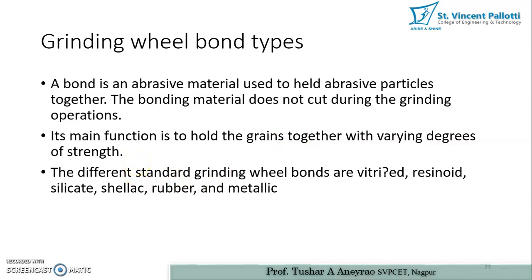The bonding material's main function is to hold the abrasive grains together with varying degrees of strength — it does not remove material from the surface. Its sole purpose is to hold the abrasive on the grinding wheel surface. The different standard grinding wheel bonds are: vitrified, resinoid, silicate, shellac, rubber, and metallic bonds.